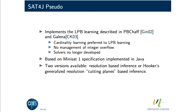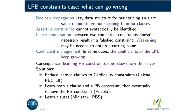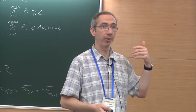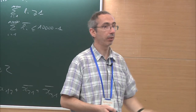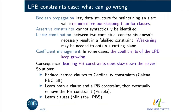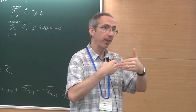What can go wrong when implementing these things? First, Boolean propagation: you no longer have lazy data structures on PB constraints, so each time you learn new constraints, the solver gets slower — just as happened in SAT before watch literals. It's not syntactical to detect that you are assertive; you have to check. Then there's the problem of how to weaken, to have conflicting constraints once you apply clashing addition.